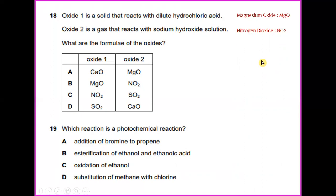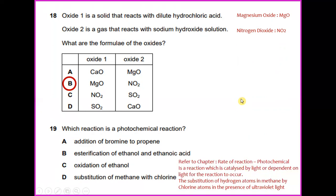Which reaction is a photochemical reaction? Refer to chapter rate of reaction. Photochemical is a reaction which is catalyzed by light or dependent on light for the reactions to occur. The substitution of hydrogen atoms in methane by chlorine atoms in the presence of ultraviolet light. So the answer is the substitution of methane with chlorine. Number 19, the answer would be D.